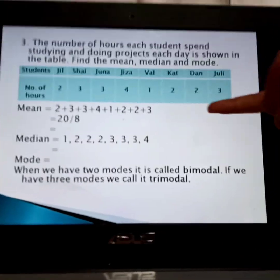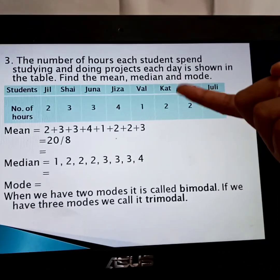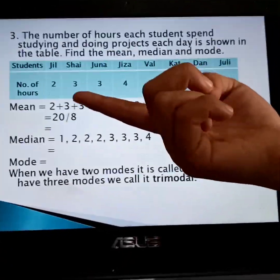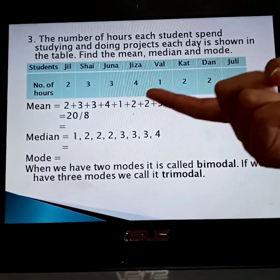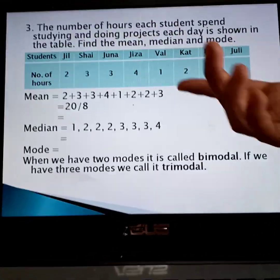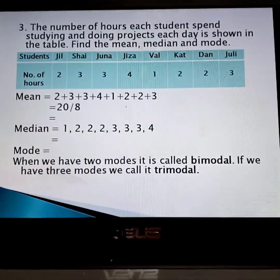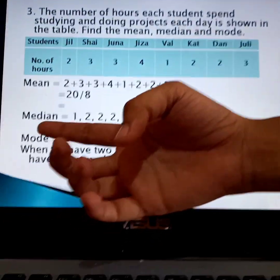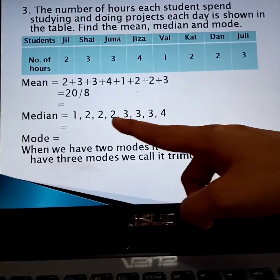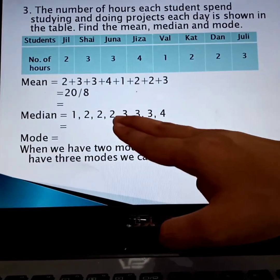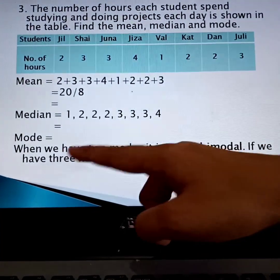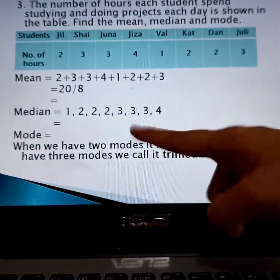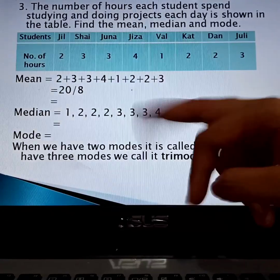I hope you really understand our lesson, class. So we have another example: the number of absences (DARS) of students — find the mean, median, and mode. We add all the given data: 2+3+3+3+3+4+1+2+2+3. We get 26 divided by 10, giving us 2.6. The median: we arrange lowest to highest, with 2 and 3 in the middle, so (2+3)/2 = 2.5. The mode is 2 and 3 because 2 appears three times and 3 appears three times.